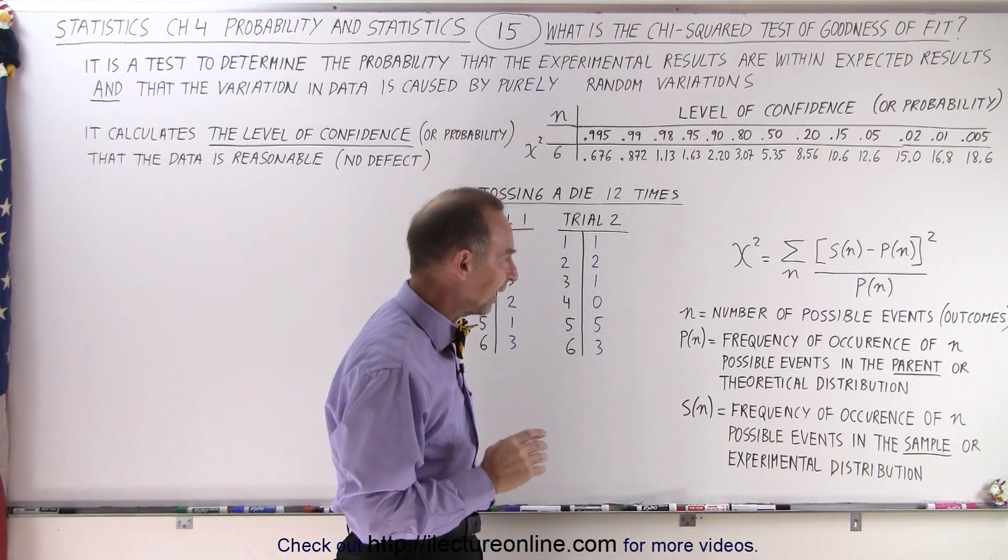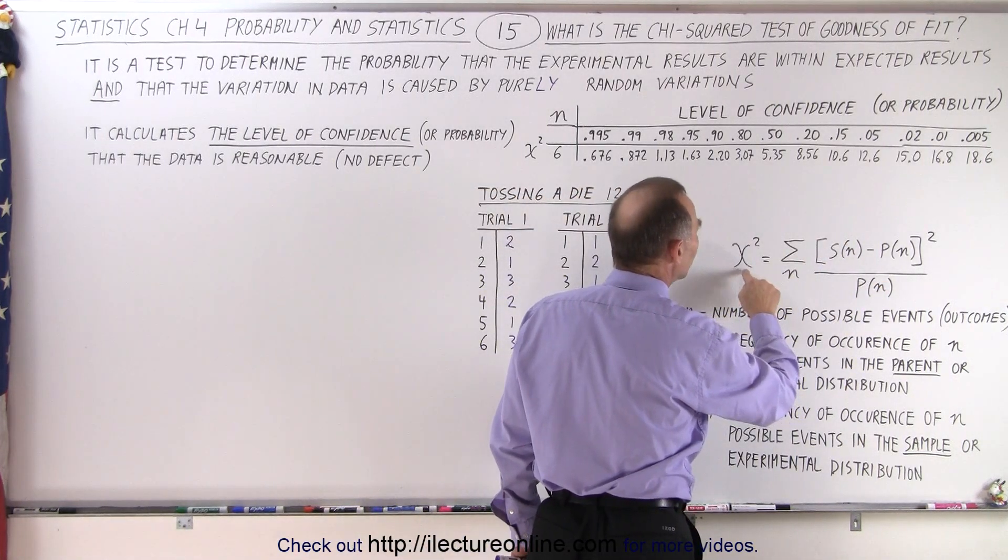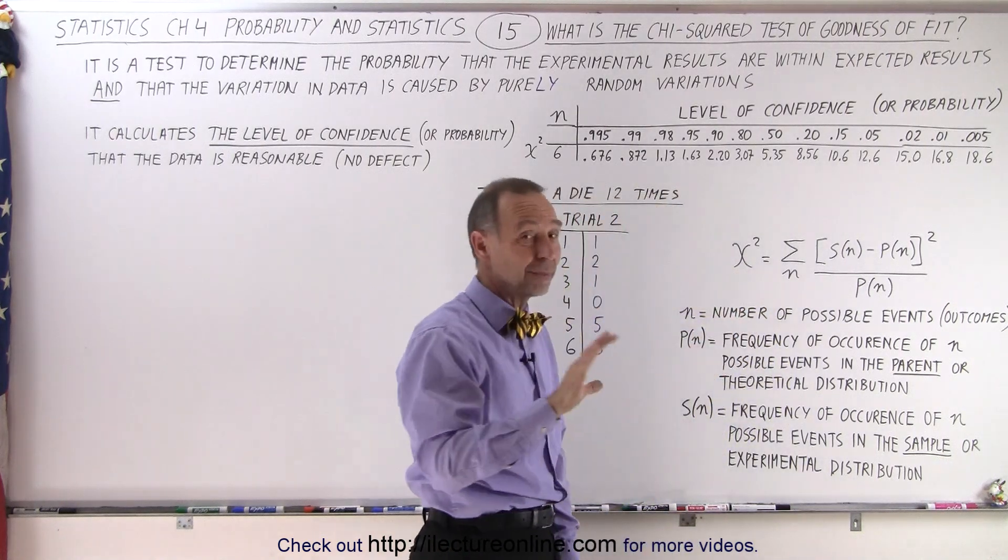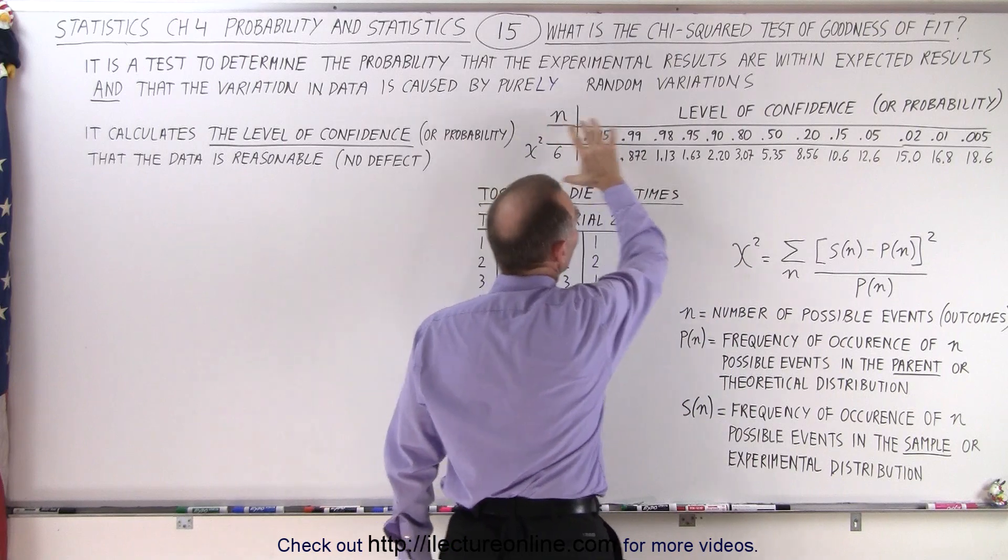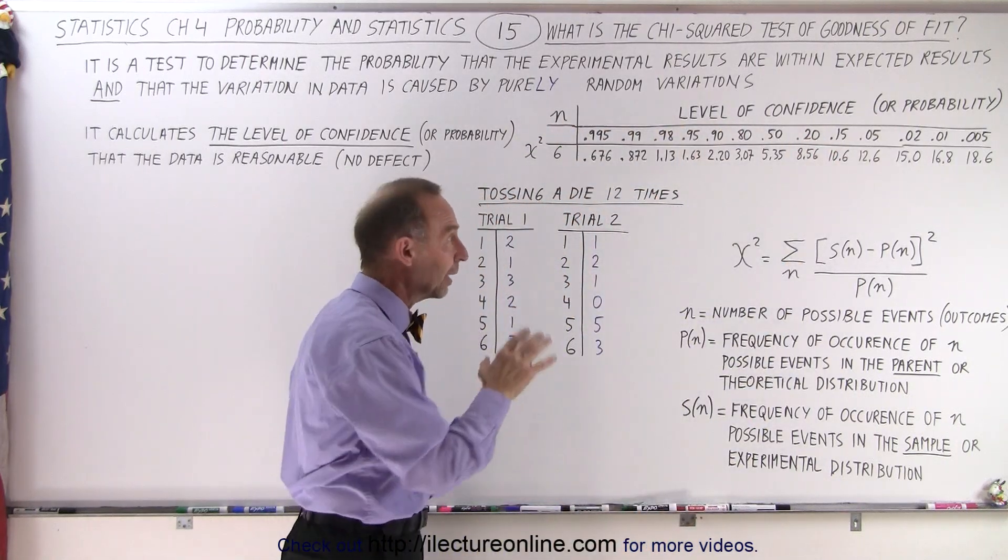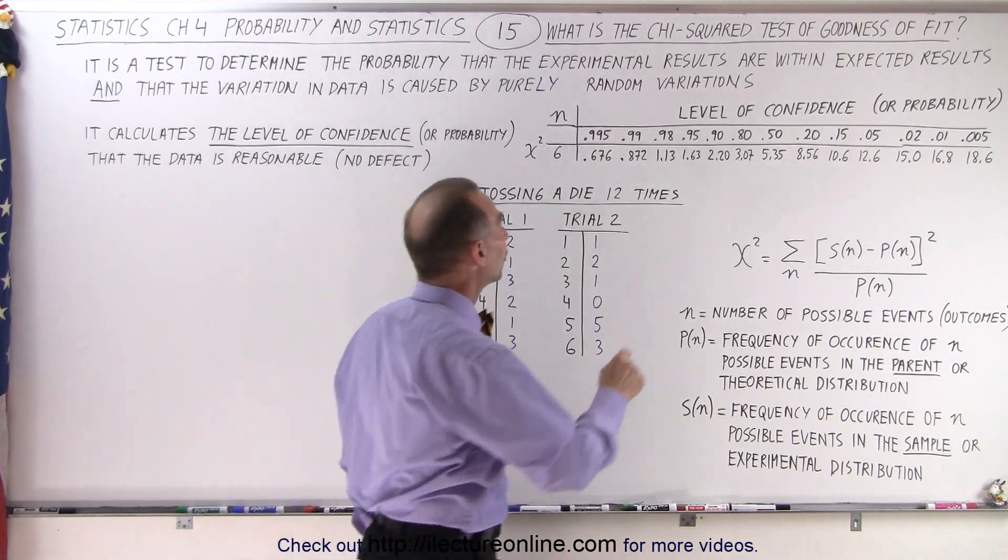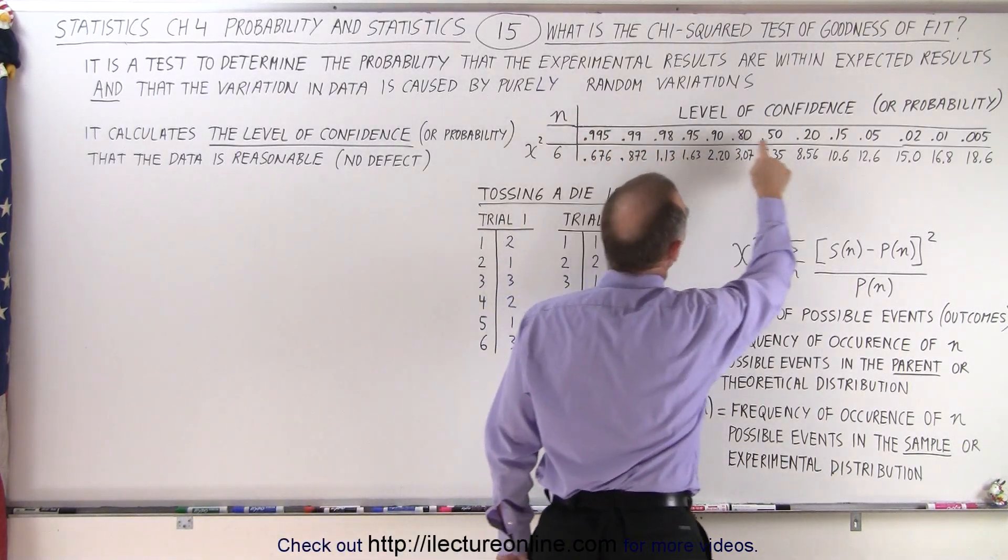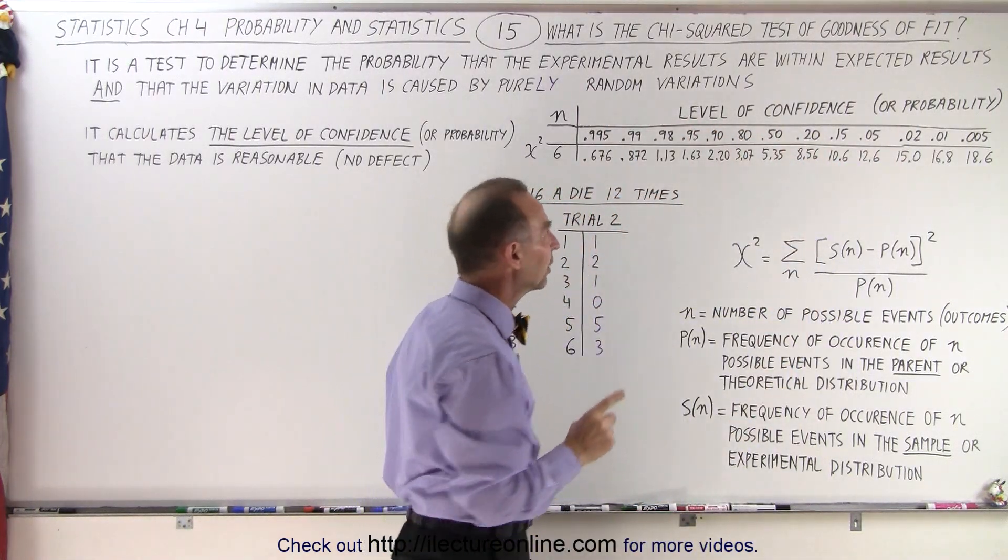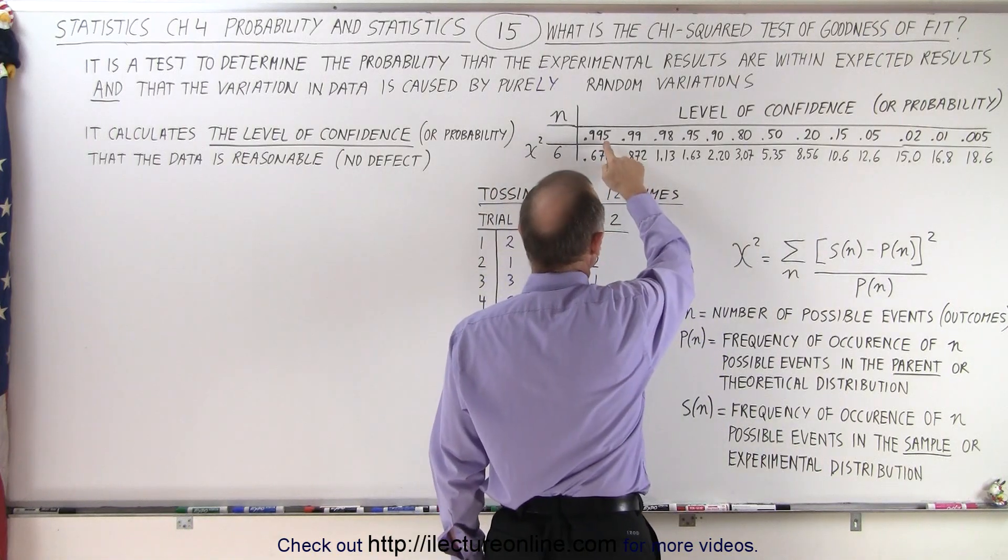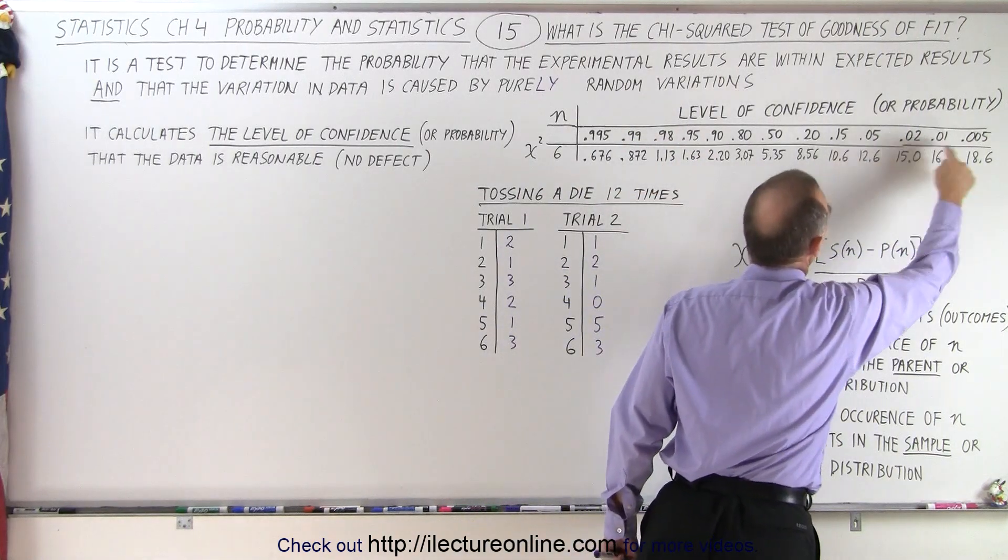And we'll show you some examples of that later. So once you sum all that up, that is equal to chi squared. Sometimes I call it psi, but it's really chi squared. Then we go to this table. Now, we're not going to show you now, at this moment, how this table is derived. That's for a later video. But notice that this line right here represents the level of confidence or probability. That's the important thing we're looking for. The level of probability. This is very high level of confidence, and this is very low level of confidence.